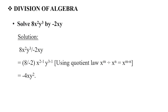Next, we get the division of algebra. Solve 8x²y³ divided by minus 2x. We use the rule x^m divided by x^n. We divide the coefficients: 8 divided by minus 2, and subtract the indices. x^(2-1) and y^(3-1). The answer is minus 4xy².